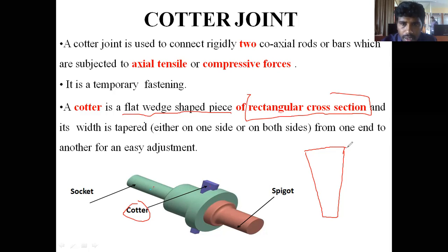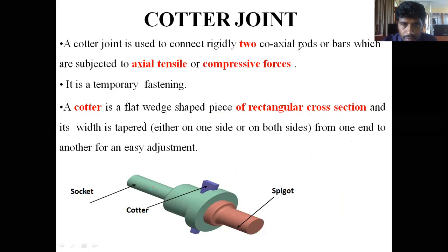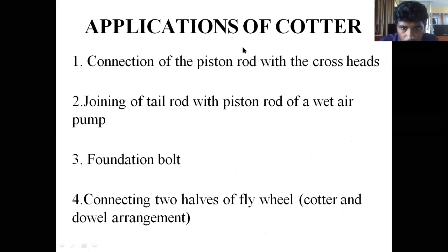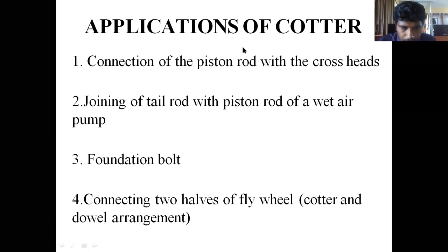Coming to the applications of cotter joints: the connection of piston rods with the crossheads of steam engines; joining of the tail rod with the piston rod of pumps; foundation bolts; and connecting the two halves of a flywheel. These arrangements may be called dog cotter and double arrangements.